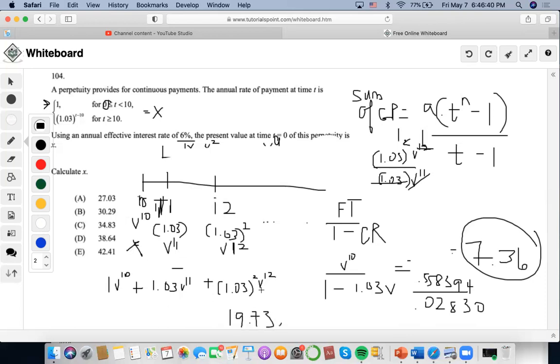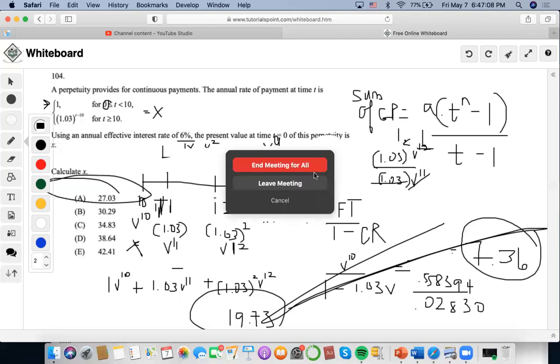So now, once I find both values, I'm able to find the present value at time equals 0, which is our x. That means I'm going to add both of these. I'm going to get 19.73 plus 7.36. And then I'm going to end up getting 27.09 as the final answer, which would be closest to choice E.